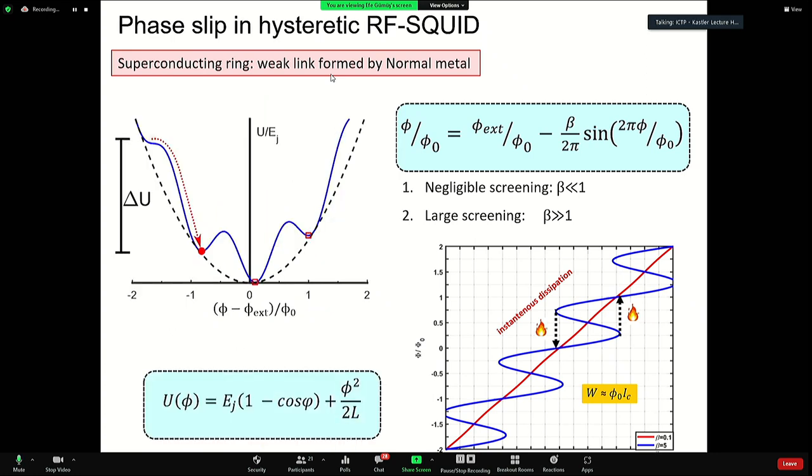We can better appreciate this dissipation if you look at the potential energy landscape of our device. We have a quadratic term from the loop inductance and the sinusoidal term from the Josephson energy. Applying this external flux corresponds to tilting this potential landscape to such an extent that the initial stable point is not stable anymore, and our phase particle falls to the next valley. This difference in free energy is dissipated.